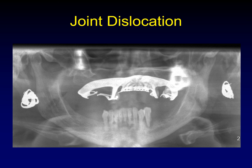On Panorex films, dislocation can be appreciated by comparing sides: on one side the condylar head sits nicely in the glenoid fossa right in its socket, while on the other the condylar head is outside the glenoid fossa, past the articular eminence — dislocated.